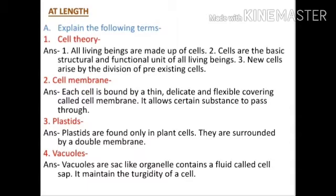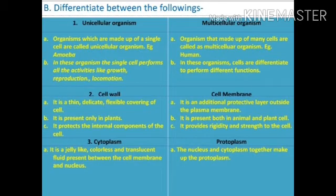Question two: cell membrane. Answer: each cell is bound by a thin, delicate, and flexible covering called the cell membrane, which allows certain substances to pass through. Question three: plastids. Answer: plastids are found only in plant cells and are surrounded by a double membrane. Question four: vacuoles. Answer: vacuoles are sac-like organelles containing a fluid called cell sap; they maintain the turgidity of a cell.